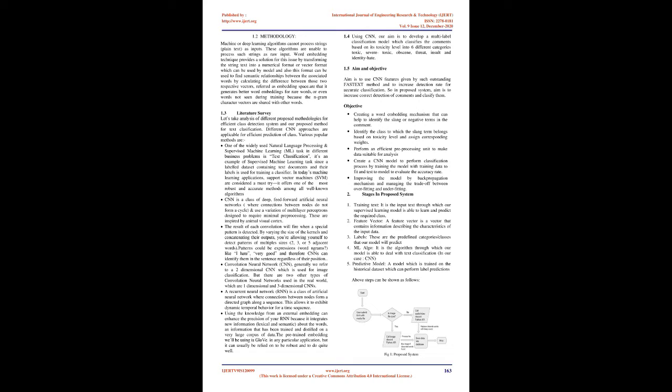The data that we have used for our model is Kaggle's toxic comment classification dataset on Wikipedia's talk page edits. Using CNN, our aim is to develop a multi-label classification model which classifies the comments based on its toxicity level into six different categories: toxic, severe toxic, obscene, threat, insult and identity hate.